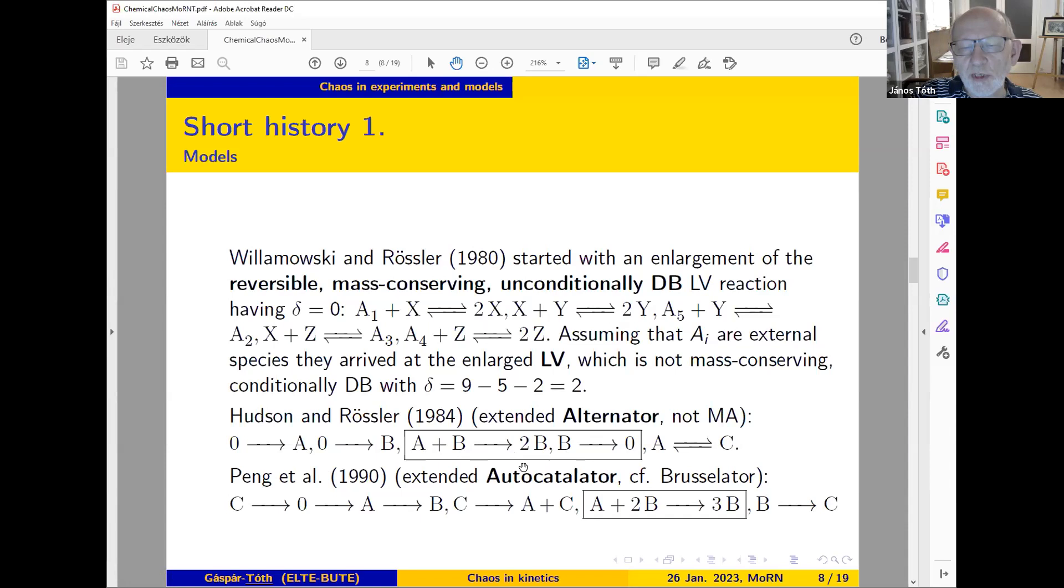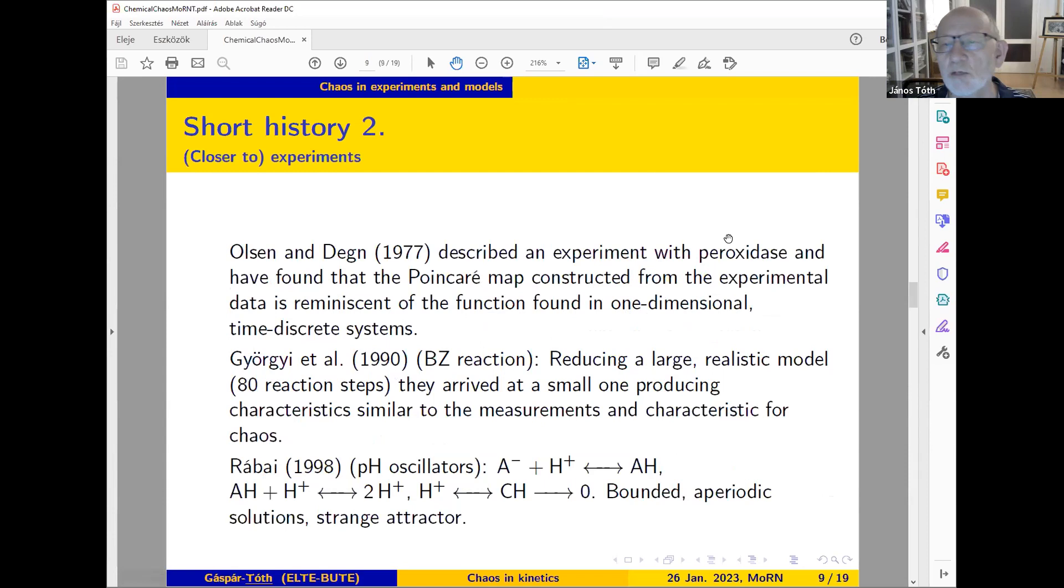Although they started from a very good model, to show approximately, numerically, behavior which might be called chaotic, they used another model not as good from the chemical point of view. Hazel and Rössler used the extended alternator, where some steps are not of mass action type and some steps are irreversible. It's not mass conserving—there is inflow and outflow. This box part is the alternator, extended because we have more steps. They made calculations and showed nice figures.